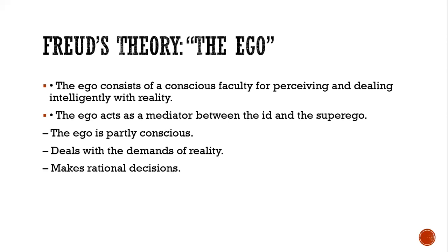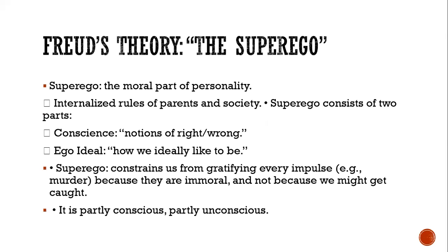The Ego consists of a conscious faculty for pursuing and dealing intelligently with reality. The ego acts as a mediator between the ID and the Superego — the superego reflects morality accepted by society and culture, while the ID is unconscious. The ego is partly conscious, deals with the demands of reality, and makes rational decisions.